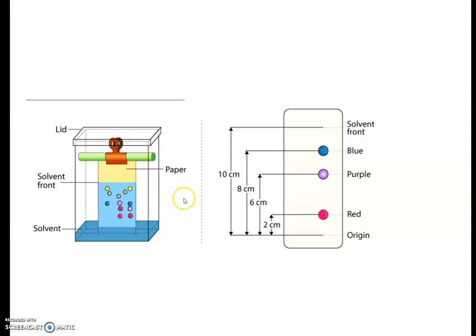So after some time, if we are putting a component which we have to separate out, sometime it will separate out like this with different layers. You can see after sometime different spots of whatever you want to separate. Maybe it may be colored components of leaves.